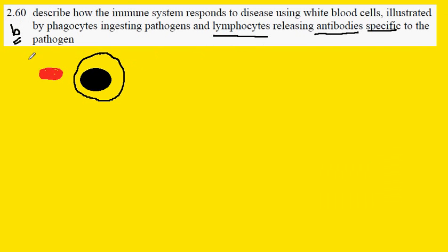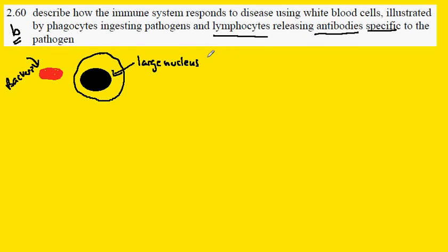Our pathogen is illustrated by a bacteria, and here is our lymphocyte. Notice that this time it has a large nucleus. This white blood cell has a large nucleus and this type is called a lymphocyte.